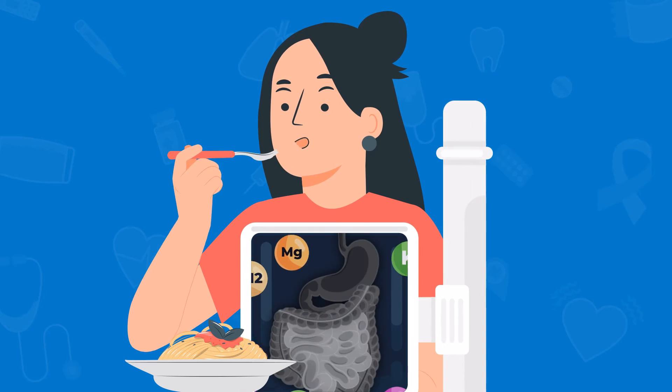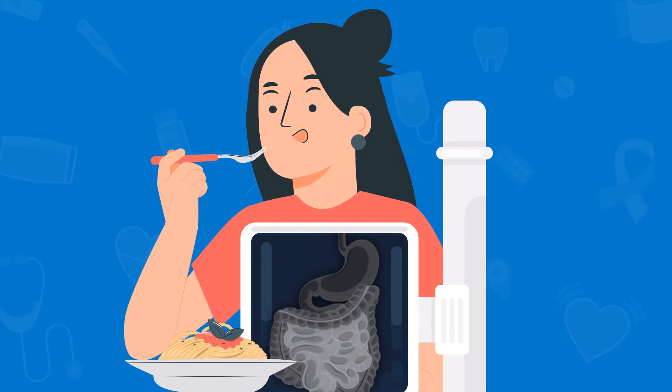A micronutrient panel such as Spectracell can be very helpful in understanding your micronutrient status. For example, if you are consuming a lot of micronutrients but may not be absorbing them, this can be indicative of leaky gut. It can be really valuable as you're looking at a complete picture and correlating it with your symptoms or your patient's symptoms to understand if leaky gut is a possibility.